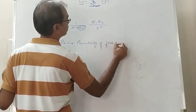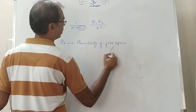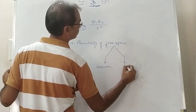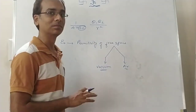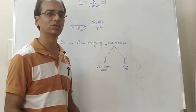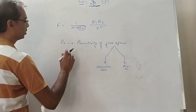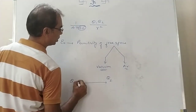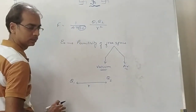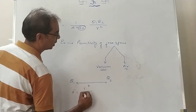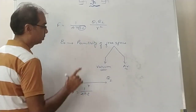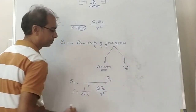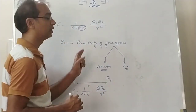Free space means vacuum or air. But if it is some other medium, how will the force change? If Q1 and Q2 are kept in another medium at separation R, then the force is written as 1 by 4 pi epsilon times q1 q2 by R squared, where epsilon is the permittivity of that medium.